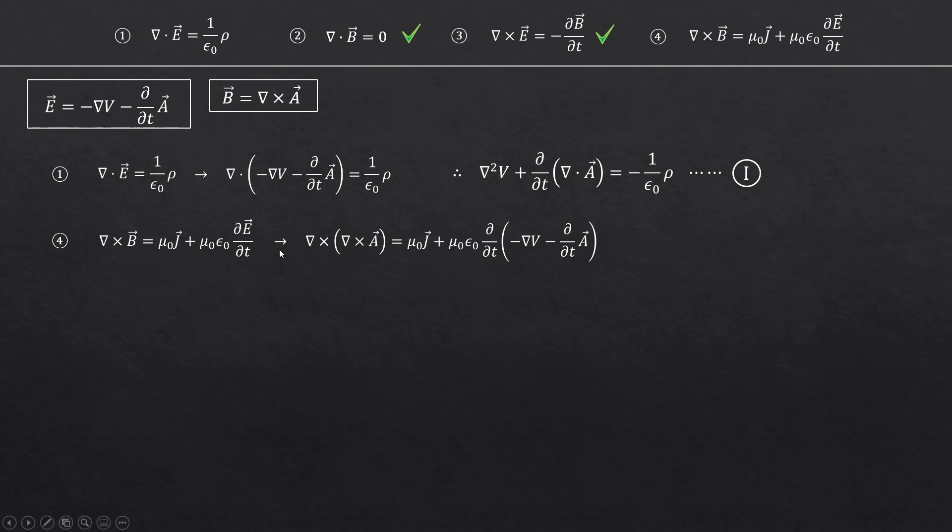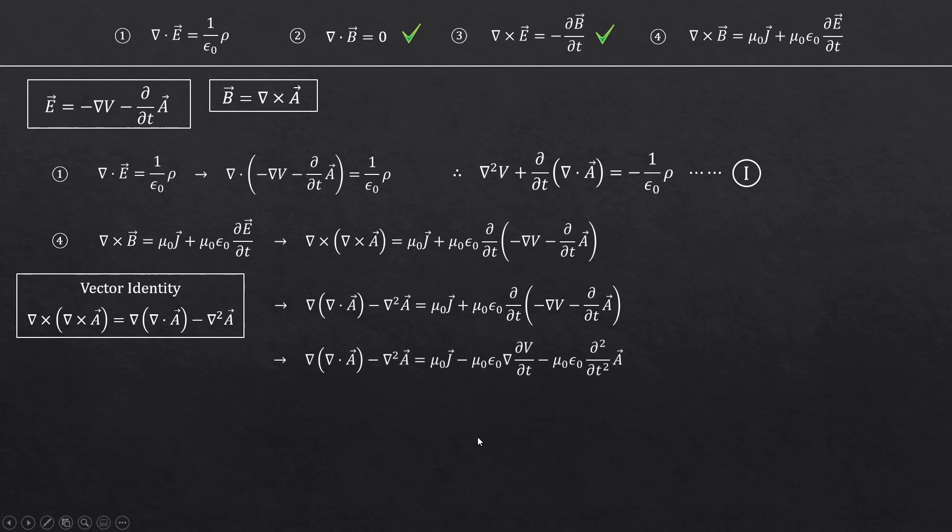Here, we have curl of curl of A. There's a proven vector identity that talks about curl of curl of a vector. So, by rewriting this, we'll have this expression. And after expanding this bracket term, then moving everything except mu j to the left-hand side,